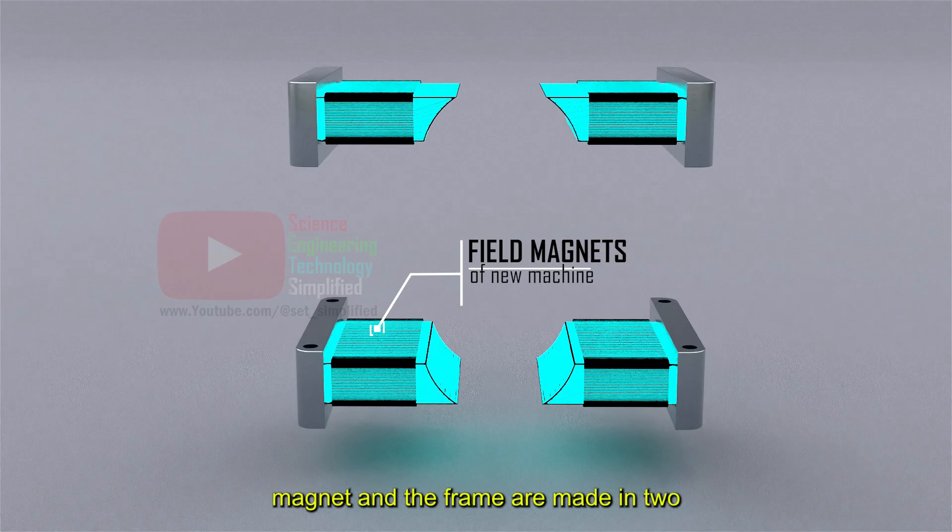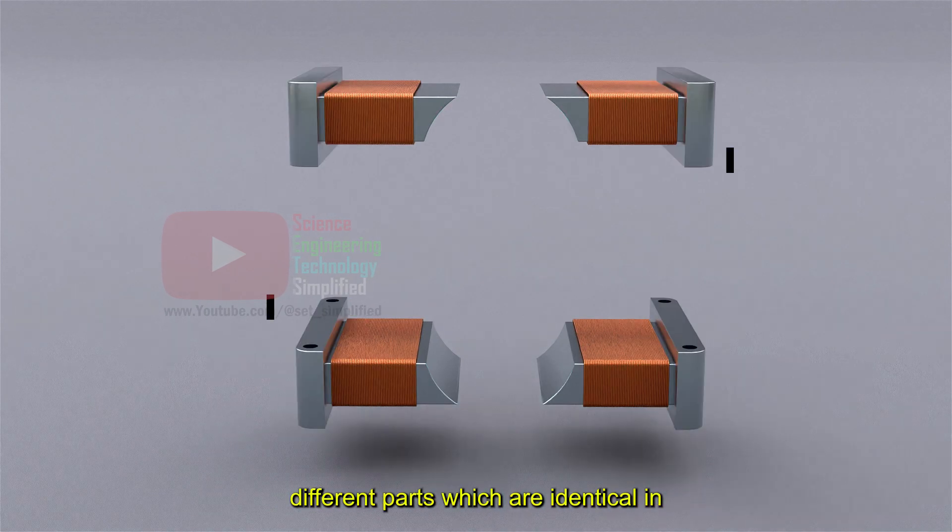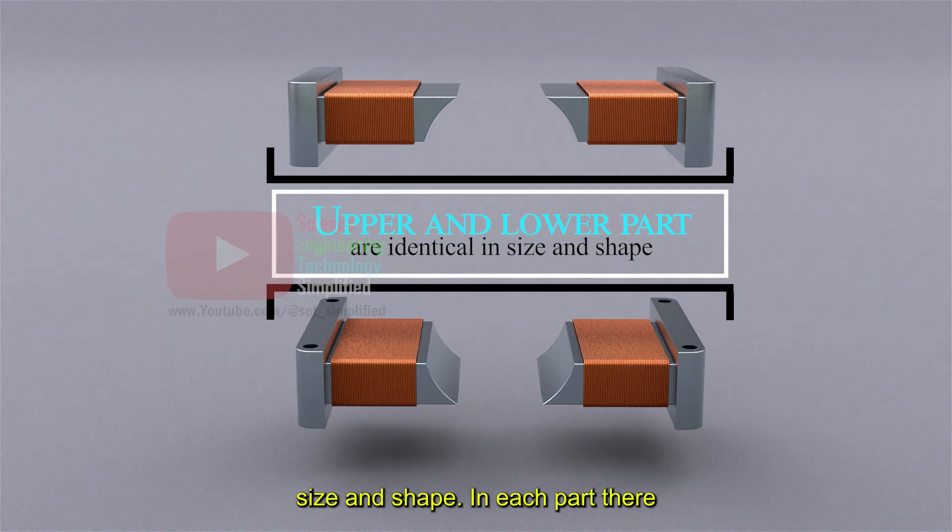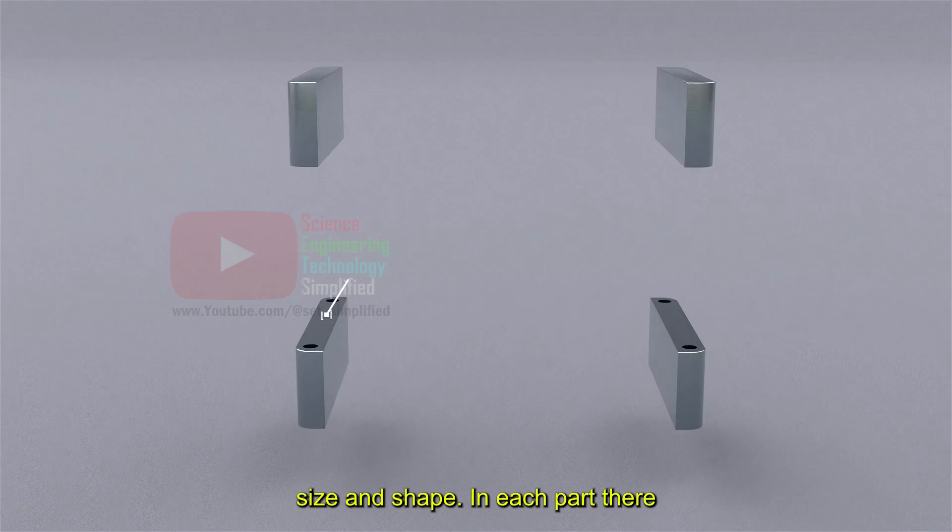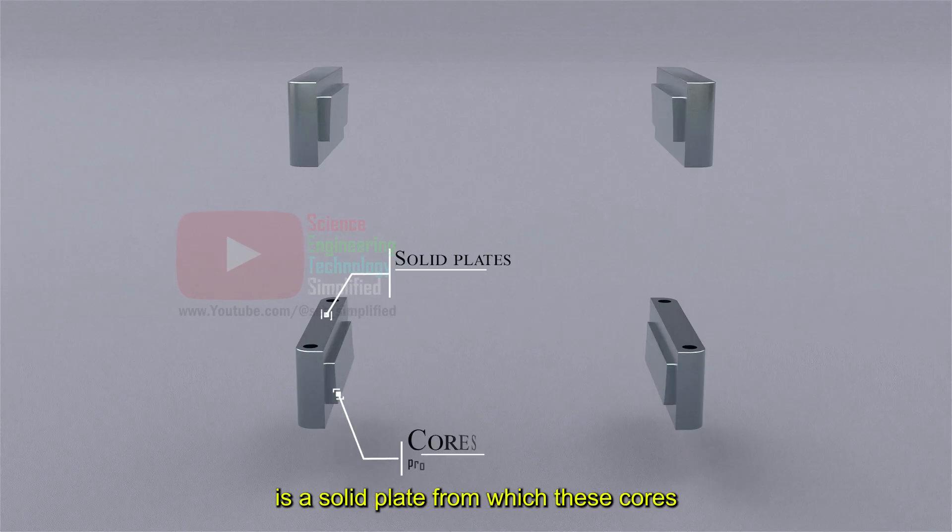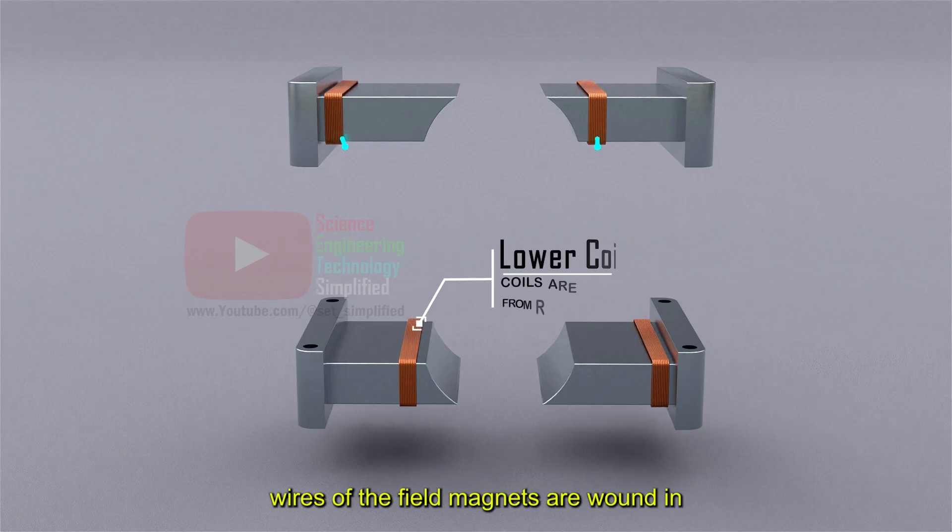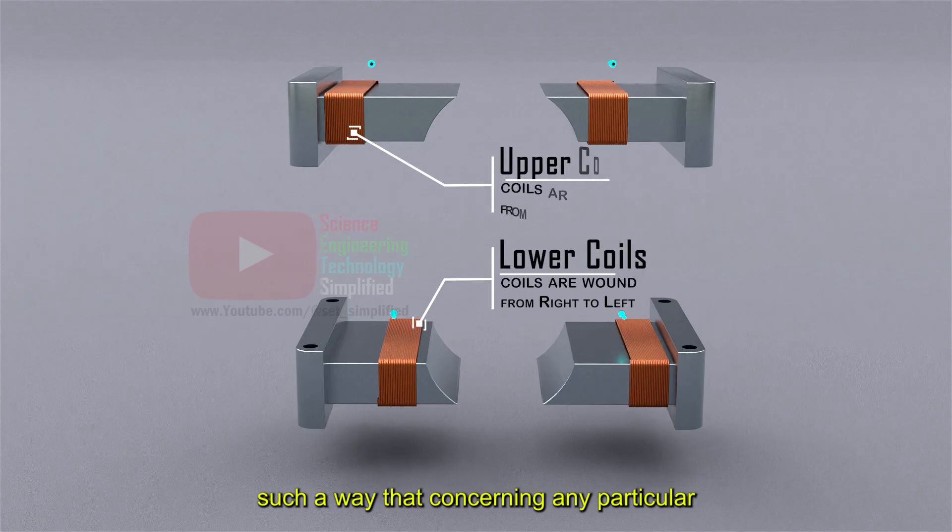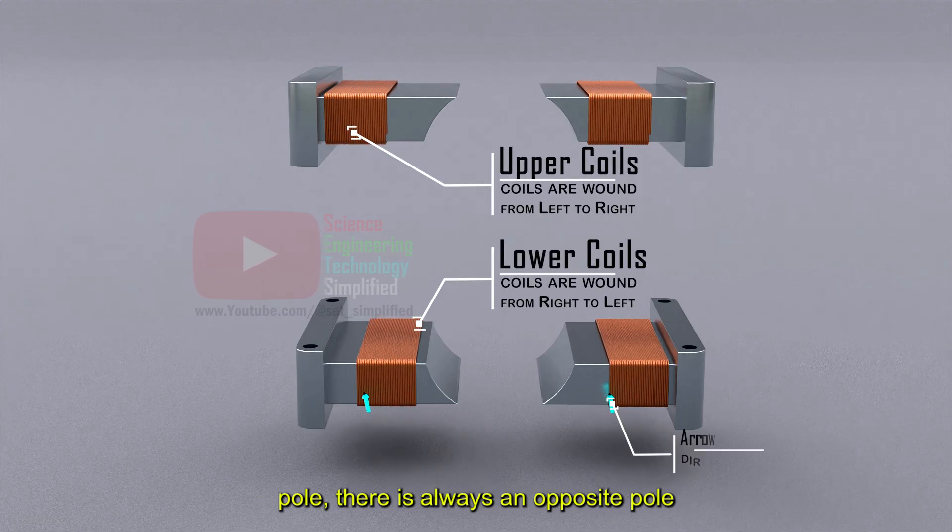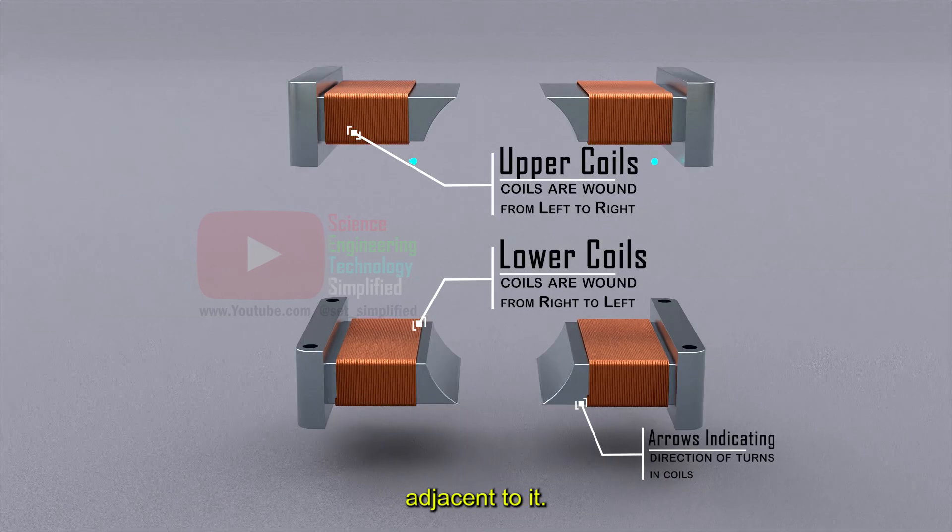See here the field magnet and the frame are made in two different parts which are identical in size and shape. In each part, there is a solid plate from which these cores project inwards. Now, the wires of the field magnets are wound in such a way that concerning any particular pole, there is always an opposite pole adjacent to it.